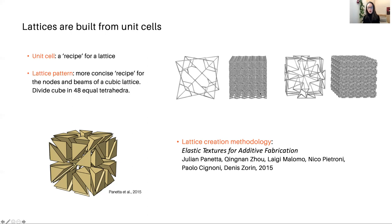In this work, we went one step further, which is to focus on cubic lattices. These are lattices where the unit cell has the additional symmetry group of the cube. Then what you can do is you can actually quotient the unit cell by the symmetry group of the cube that results in a lattice pattern. That's the nodes and beams of the lattice that appear on one of these 48 tetrahedra that we divide the cube into based on the symmetry group of the cube. This was the approach introduced in this paper, Elastic Textures for Additive Fabrication.